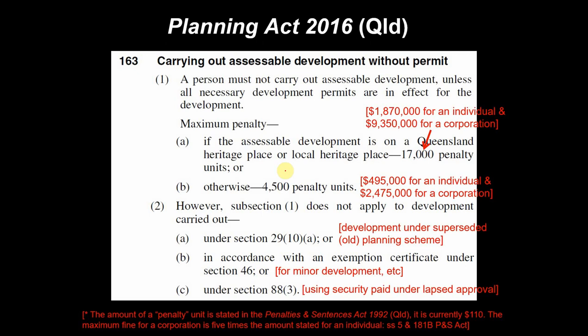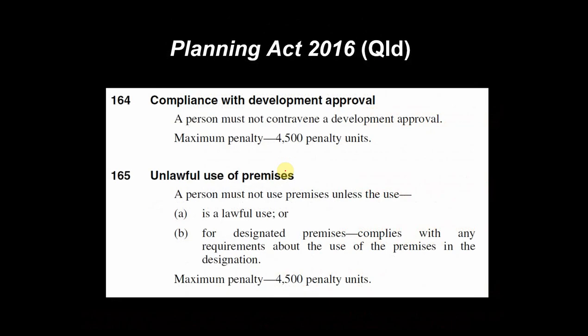For section 163, ignoring heritage issues, the maximum penalty is 4,500 penalty units — currently $495,000 for an individual and $2.5 million for a corporation. That's the offence of carrying out assessable development without a permit. More applicable here was section 164, breaching a development approval, which carries the same maximum penalty of 4,500 penalty units. Section 165 — unlawful use of premises — is another common offence but isn't particularly relevant to these facts.